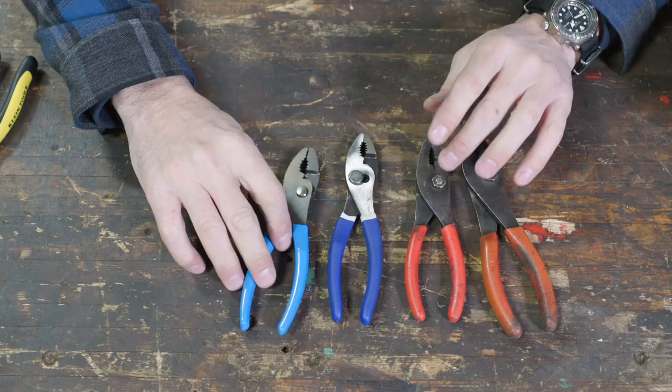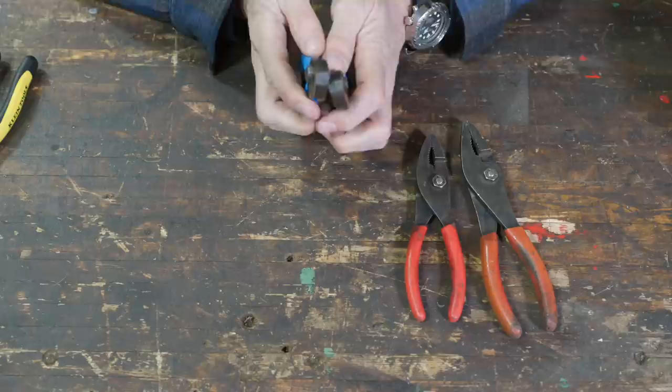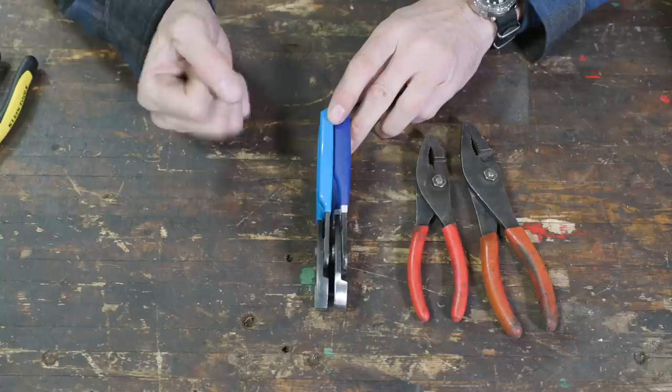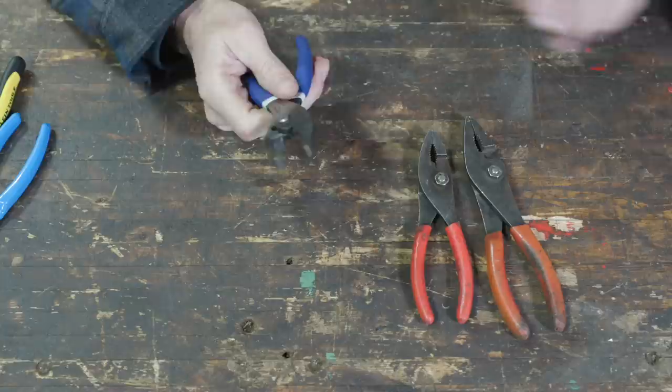When it comes to, I'm just going to go with the Williams. I don't like the channel locks primarily because I don't like that vinyl, that slippery vinyl. What it comes down to with these is that the Williams are just a little bit more robust, bigger handles. It's going to be less pressure points on your hand when you're squeezing. These just feel too dainty and too small.